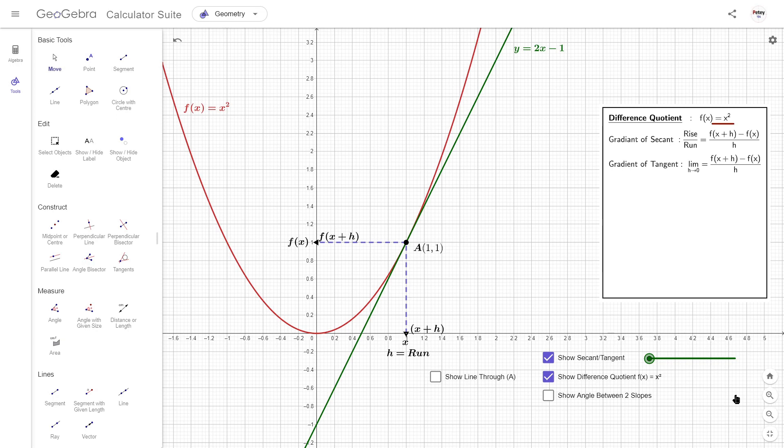So, replacing the x with these values gives us this. We can expand that to this. The x squareds can go, which leaves us with this. The h's cancel. And now, plugging in 0 for h is no longer a problem.